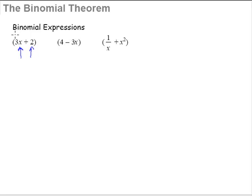The term binomial simply means two. Just as a bicycle has two wheels, a bipod has two legs and so on. So any expression like this is called a binomial expression.